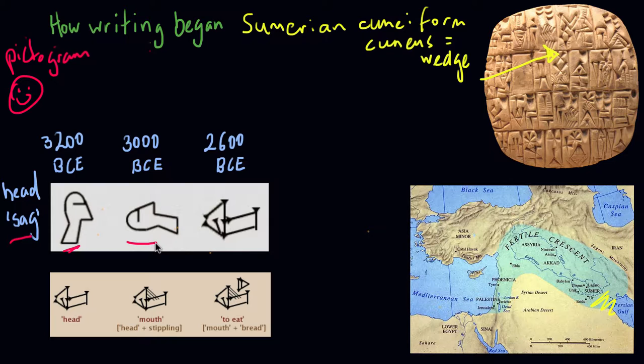And as they evolved further, they become more abstract and more standardised. And we start to see the distinctive wedge shape from a reed stylus being impressed on the clay tablets.